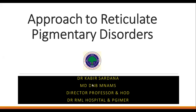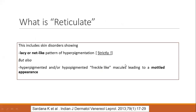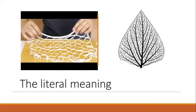Let's first begin with the first slide and tell you what is the meaning of reticulate. Reticulate has got two basic meanings. One is a net-like appearance, what you see on the left side, or what is more useful to understand is from biology, where you have a reticulate pattern on leaves. So this is the kind of pattern that we would be referring to.